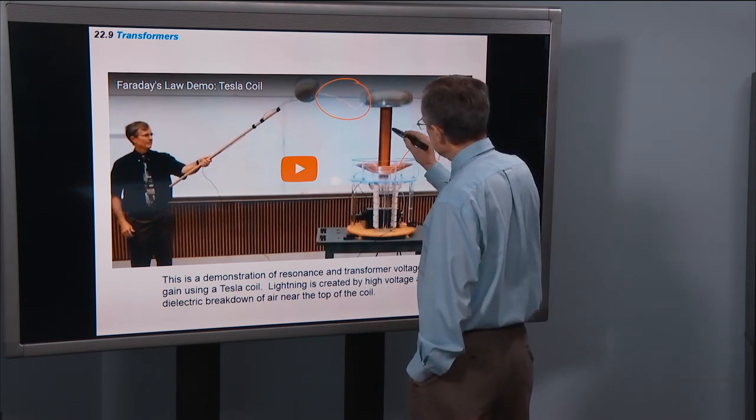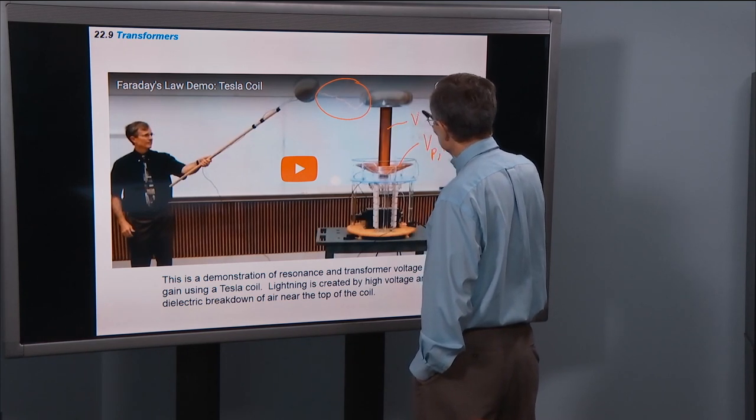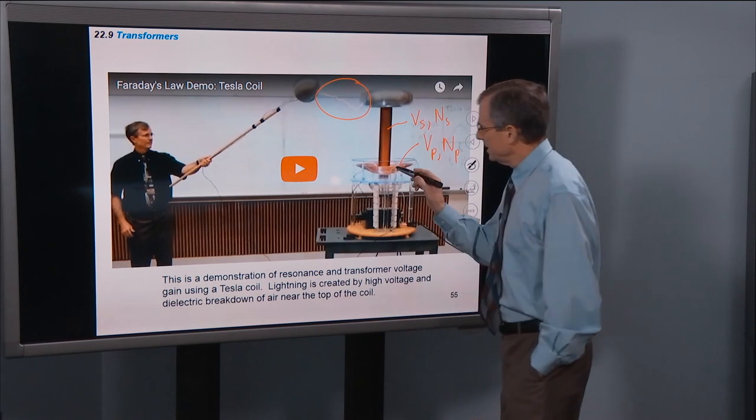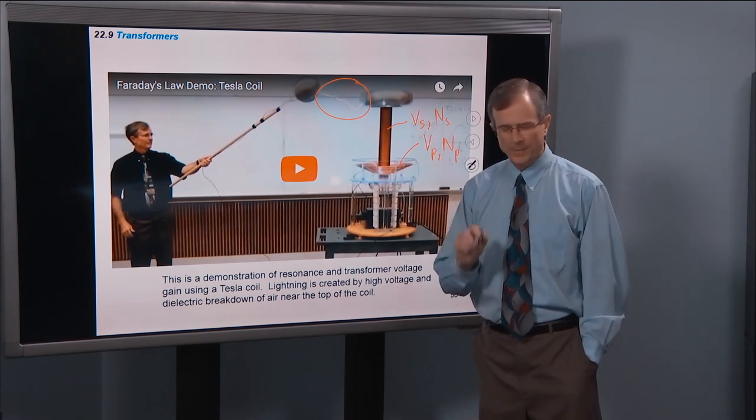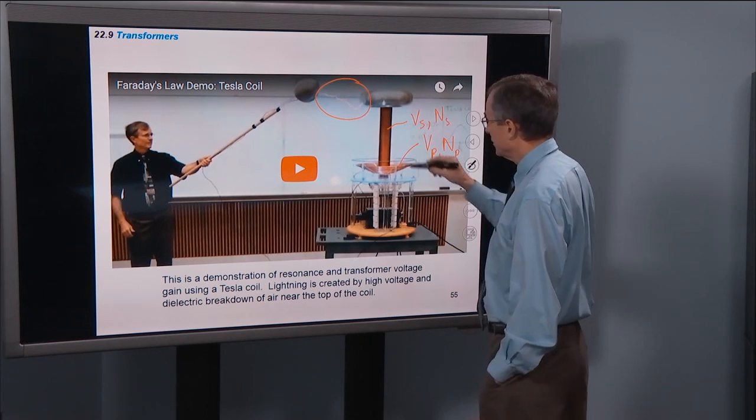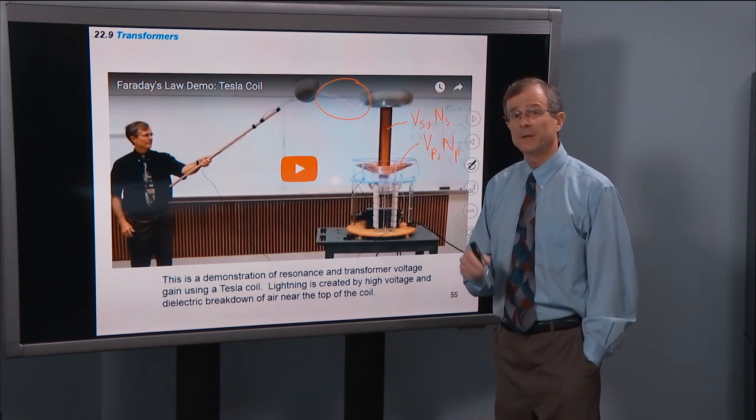And then, this is a cylinder, this is the secondary, it is a long cylinder with very, very fine wire in it. And that number of turns in the secondary is very, very big.